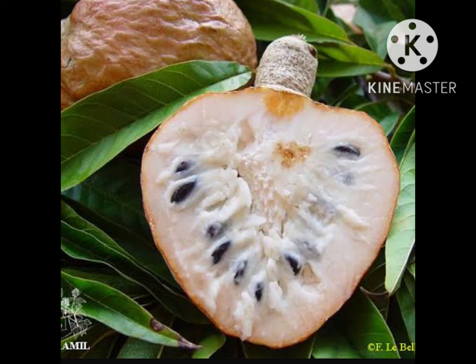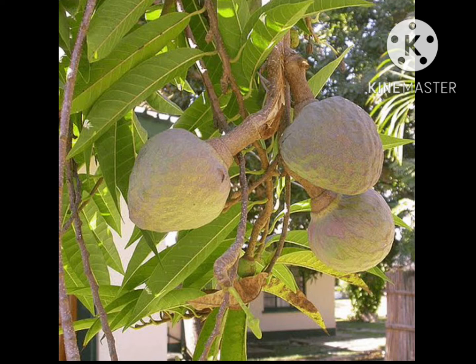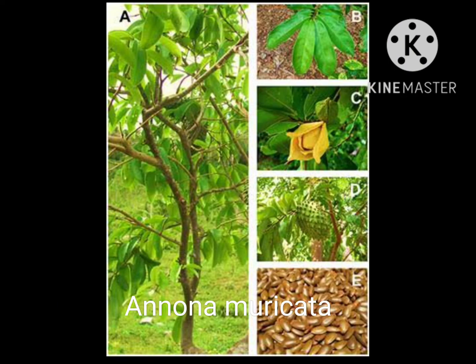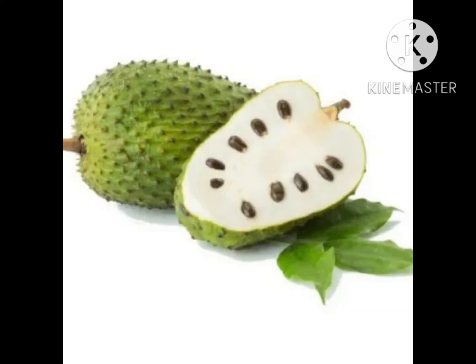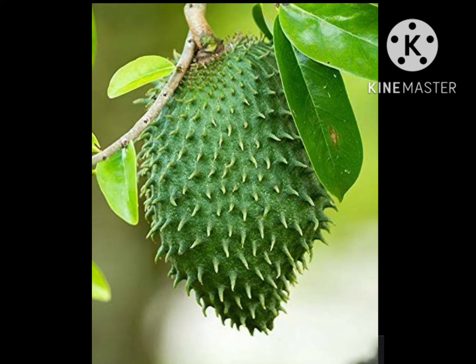Leaves are alternate, simple, exstipulate; margin is wavy, and oil ducts or oil glands are present in the leaves. The inflorescence is solitary or fasciculate cyme, axillary or terminal in position. The flower is bracteate, bracteolate, pedicellate, actinomorphic, bisexual, hypogynous, and trimerous. Calyx: perianth tepals 3+3, arranged in whorls, polypetalous, valvate aestivation.